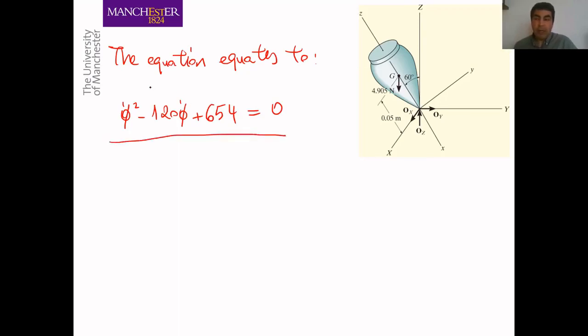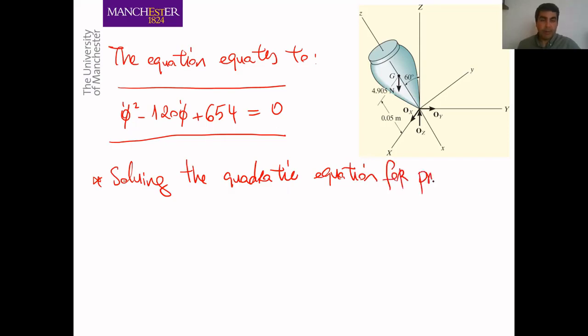And we can solve this equation and we can find out what is our phi dot. So we can find out, solving the quadratic equation for precession, you can get obviously two different values for phi dot which is 114 radians per second and 5.72 radians per second.